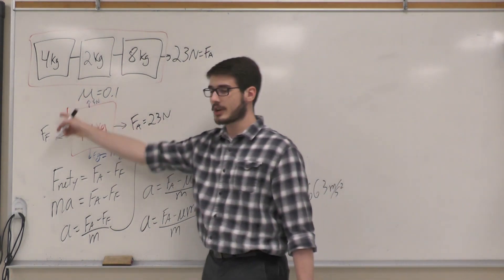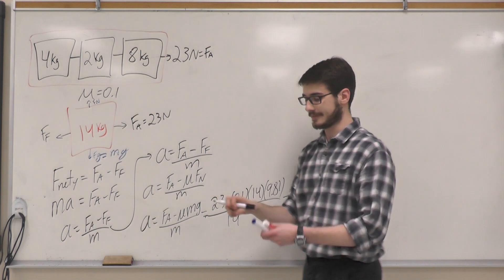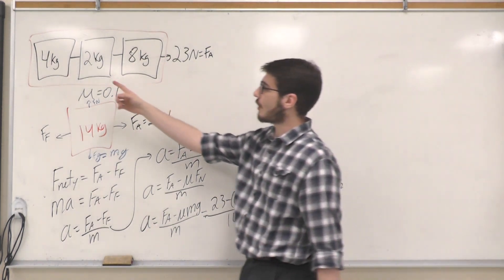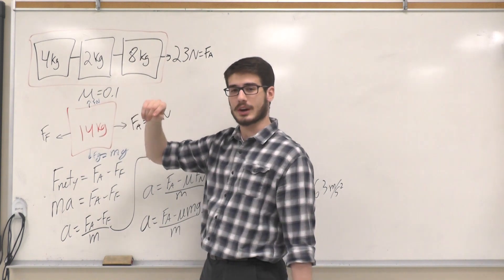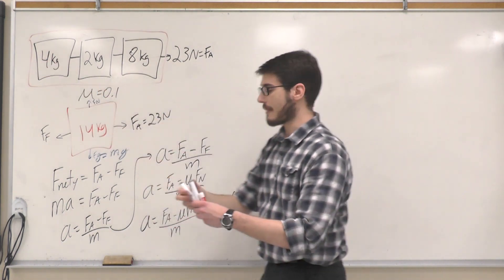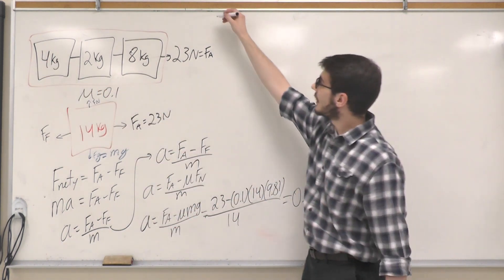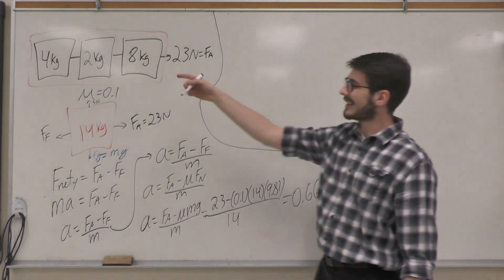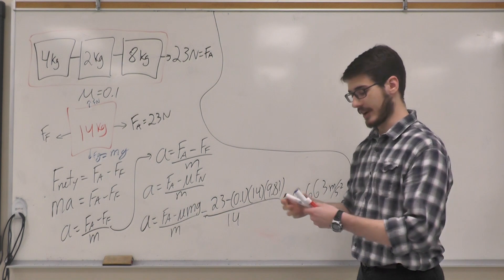Plugging in to the calculator, I will get that the value is 0.06 meters per second squared. That is my acceleration for one cart or the entire cart together. To continue on the question, I'm going to look now to solve for the tensions present between the carts. I want to start at the very back one.